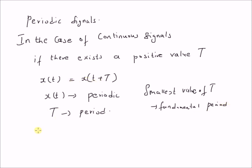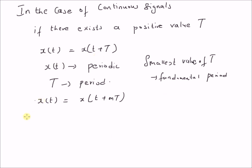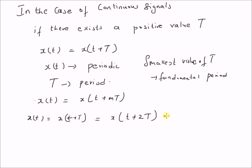From this relation, we can clearly see that x(t) is equal to x(t + mT), where m is an integer. That is, if x(t) equals x(t + T), then x(t + T) equals x(t + 2T). If you repeat the process m times, it should be equal to x(t + mT).